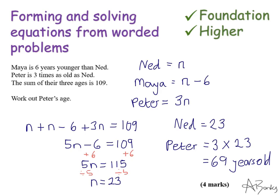Now, what I can actually do to check, though, although they're not asking me for Maya's age, I could work out Maya's age as well. So Maya is Ned's age, take away six. So 23 take away six is 17. And then I can just check that what I've done actually works. So do these three ages add up to 109?